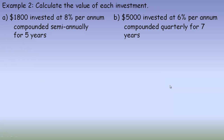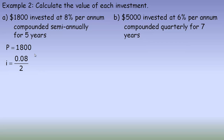In example 2 on the final page, we use the formula to calculate the value of each investment. The first has $1,800 invested at 8% per annum, compounded semi-annually for 5 years. So P equals $1,800. To calculate i, we take 8% written as a decimal — 0.08 — and divide by 2 because semi-annually is twice a year, giving i equals 0.04.